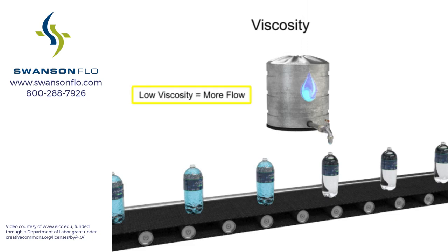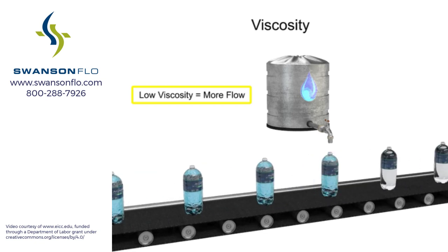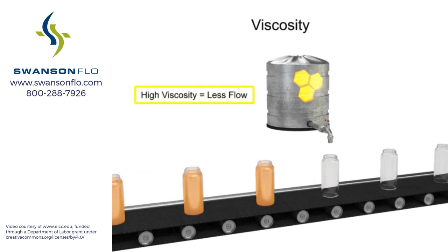Fluids with low viscosity flow very easily. Water is a type of fluid with low viscosity. Fluids with high viscosity are more resistant to flow. Honey is a type of fluid with a high viscosity. Therefore, honey is more viscous than water.